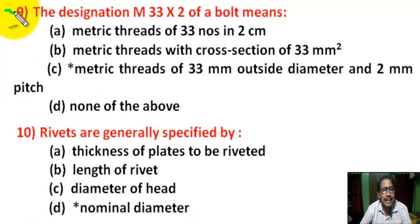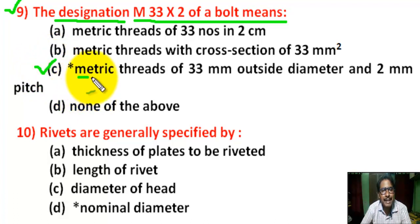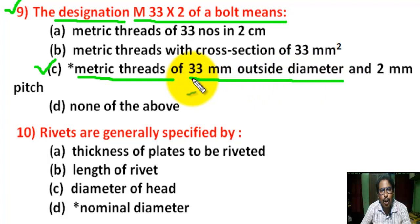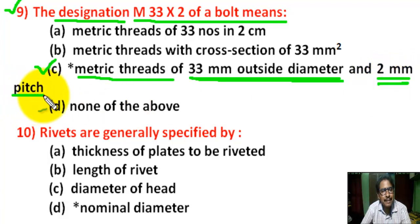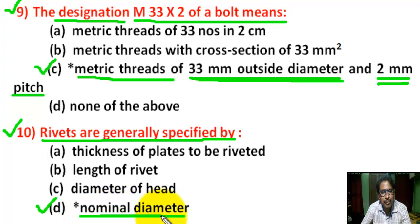Question number 9: the designation M33x2 of a bolt means — there are 4 options. Correct answer is C: M means metric thread, 33mm means 33mm outer diameter or nominal diameter, and 2mm pitch. Question number 10: rivets are generally specified by — there are 4 options. Correct answer is D: Nominal diameter of the shank, or outer diameter of the shank.